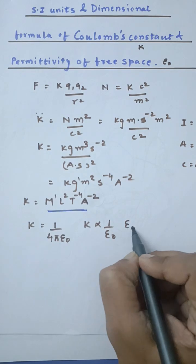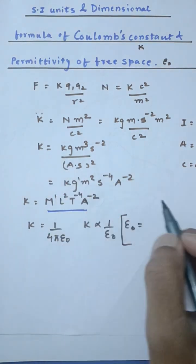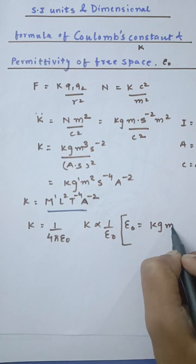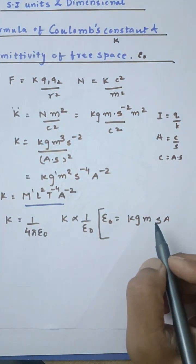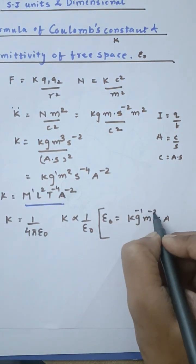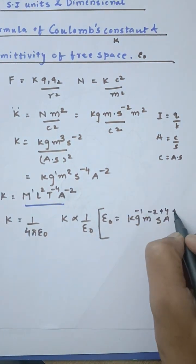So ε₀ will have the SI unit as kg·m, then second·ampere, and we need to flip these units, which means kg⁻¹, meter⁻², plus 4, and this is plus 2.